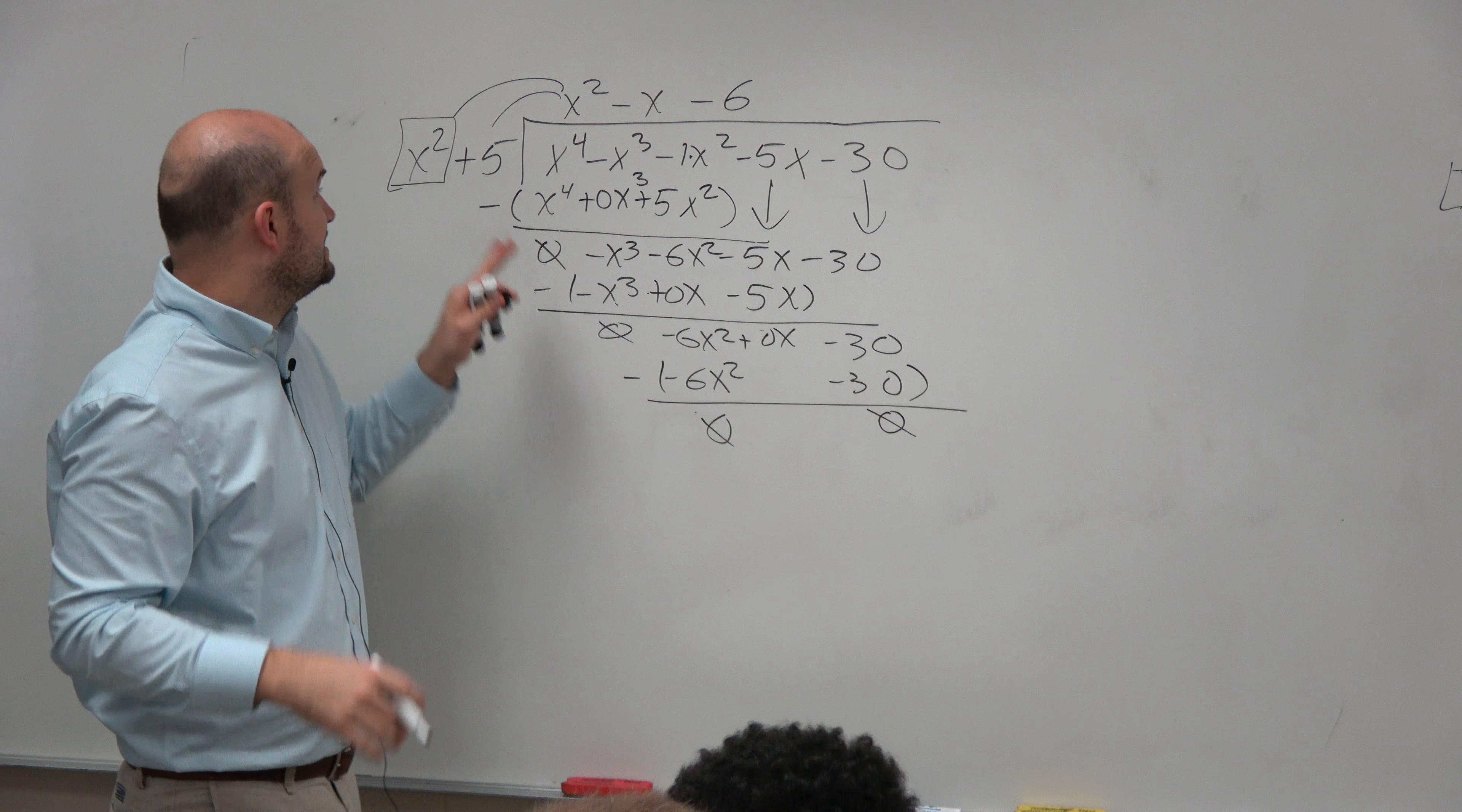Therefore, now we've got to be careful a little bit. It's not really the factor theorem yet, because is this factor in the form of our factor in the factor theorem? No, the factor theorem was linear. This is a quadratic, right? But it's still important, though. This does tell us that this factor is a factor of the polynomial. So therefore, that means I can write this polynomial, this dividend, as y equals x squared plus 5 times x squared minus x minus 6.